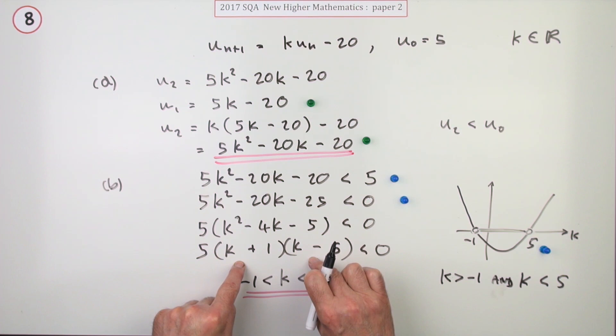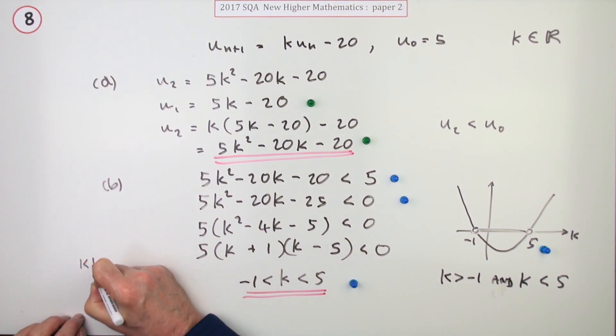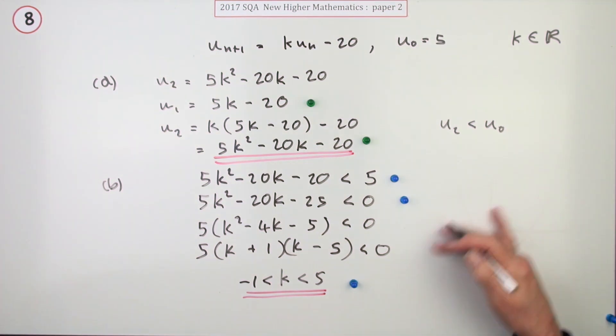What you can't do at this stage is create two independent inequations because that wouldn't be true. You couldn't say k plus 1 is less than 0, k minus 5 is less than 0, because that would be negative and that would be negative and the product would be positive. So don't try and do that.